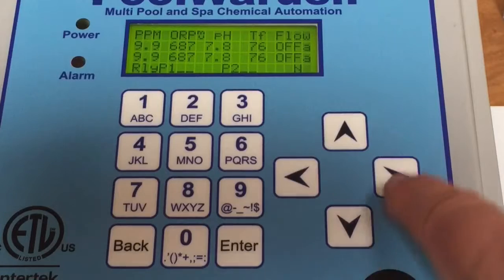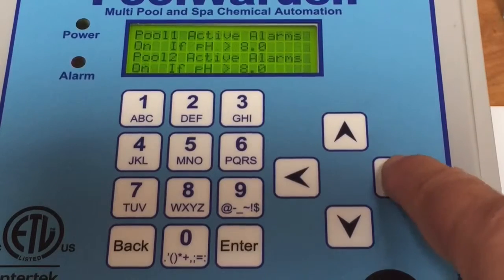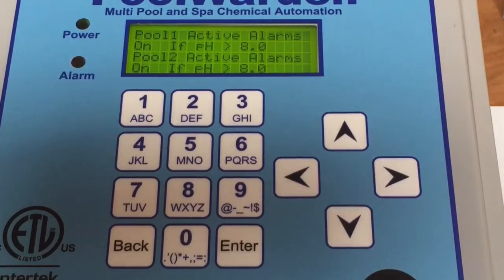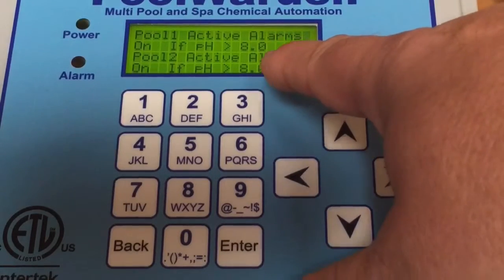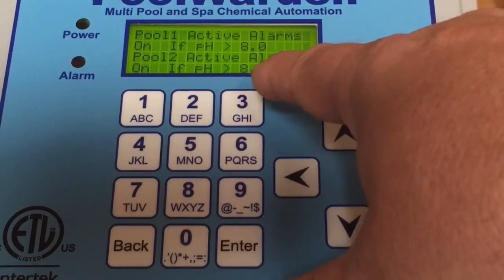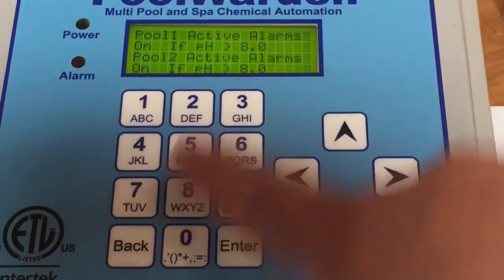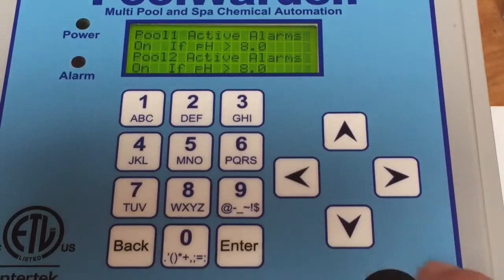To find out what the alarm situation is, push the right arrow and that will give you, in this case, pH is greater than 8.0 on pool one and also on pool two. So whatever the alarm situation is, that's an easy way to access that.